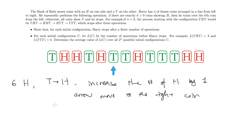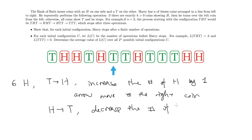Similarly, if the current coin is a head, then flipping it over will decrease the number of heads by 1. So the indicator arrow is going to move to the left-hand side. Personally, I find this indicator very helpful for me to visualize the problem.